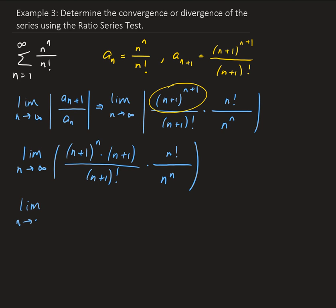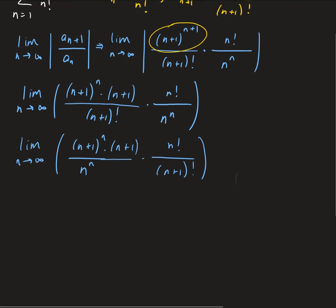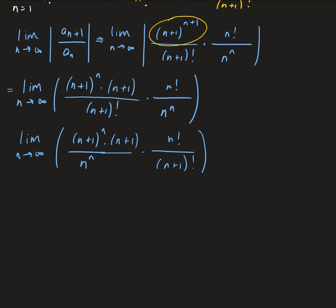So we have the limit as n goes to infinity. I'm going to put (n+1) to the n over n to the n together, and then separately handle the (n+1) factor and the factorial part. Looking at the factorial part — n factorial over (n+1) factorial — this is going to give us 1 over (n+1).